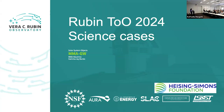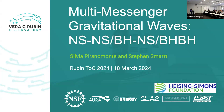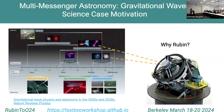Hello everybody, thank you very much. I want to thank the organizers for inviting me here. I'm very happy to work with you during these days, and thank you for giving me the opportunity to act as chair and co-editor together with Stephen Smart about this very important science case for Rubin. In this fast talk I will try to introduce this science case, especially for people who don't work with gravitational wave astrophysical sources, and explain why we need Rubin for this science case.